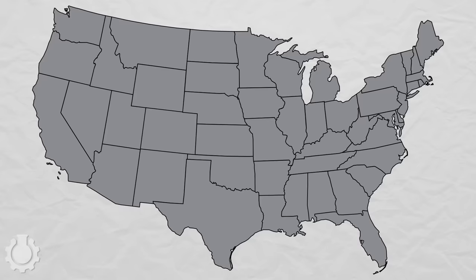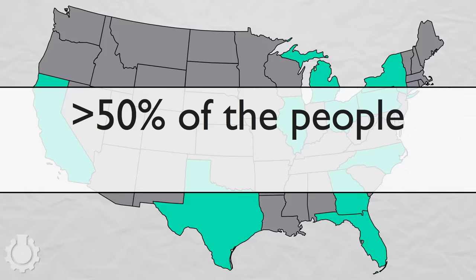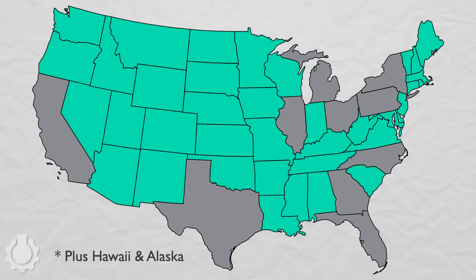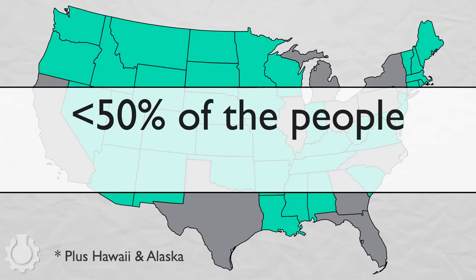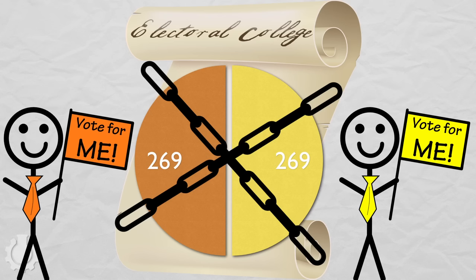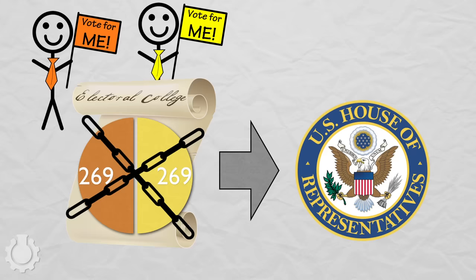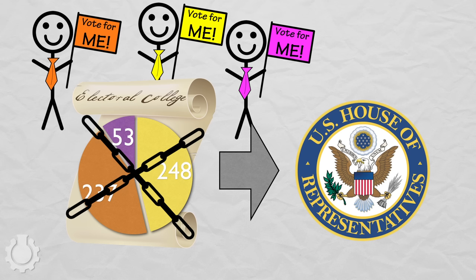This is an incredibly disproportionate system, because just 10 states — California, Texas, New York, Florida, Illinois, Pennsylvania, Ohio, Michigan, Georgia, and North Carolina — contain more than half the population of the United States, but get only 20% of the votes if the race for president is tied. And the other 40 states with less than half the population get 80% of the votes.